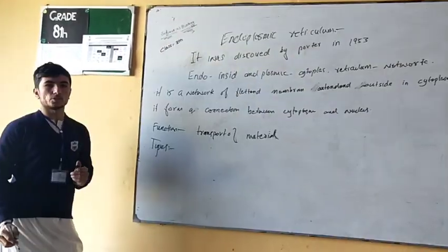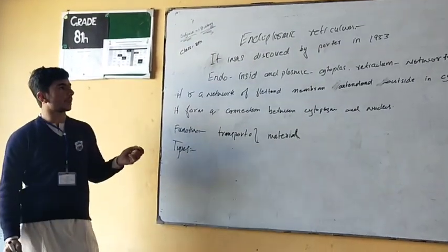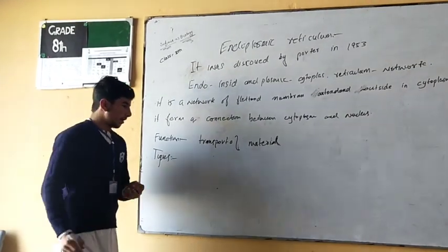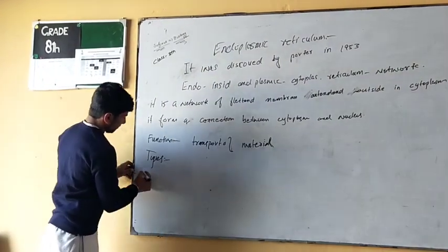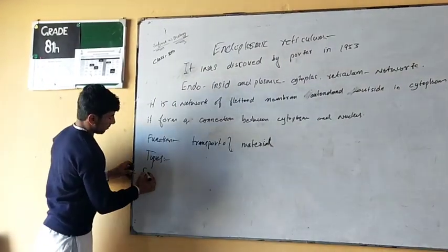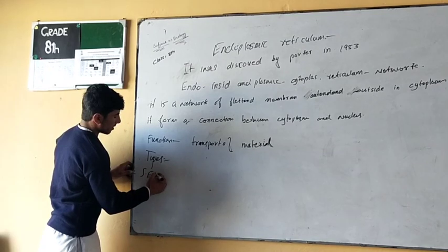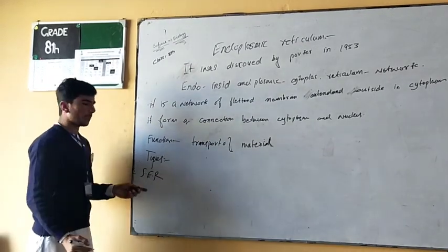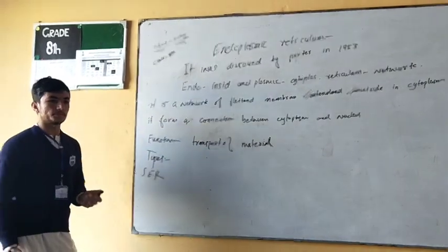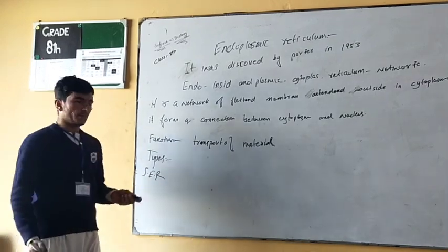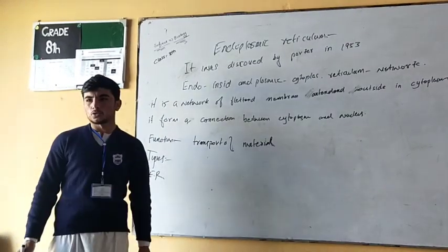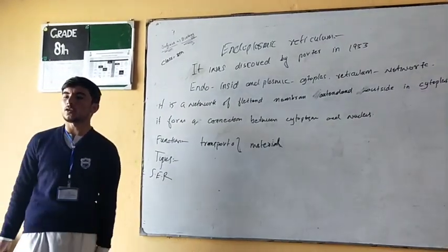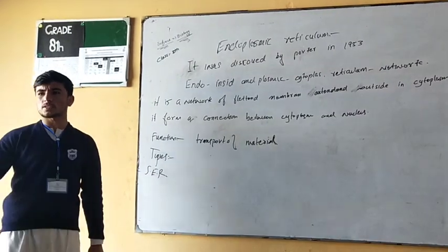There are two types of endoplasmic reticulum. One is smooth endoplasmic reticulum. The other has ribosomes attached to it, making it granular in appearance.